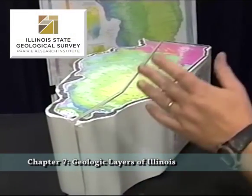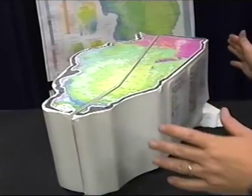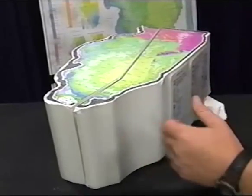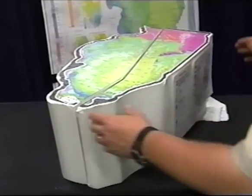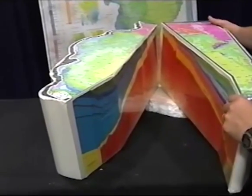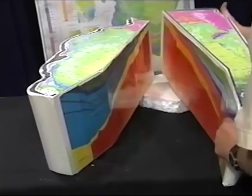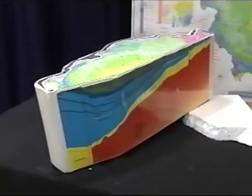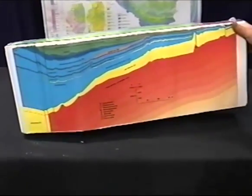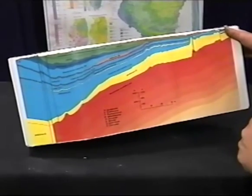Here is a model of Illinois, and this can be used to illustrate one of the processes that was going on during the time of the ancient ocean and the ancient delta swamp. This model of Illinois can be split open to show the rock layers inside. The rock layers inside aren't really all these bright colors, but we color code them so that we can show them easily in this model.